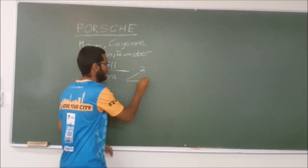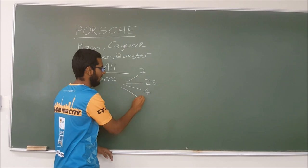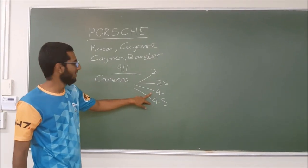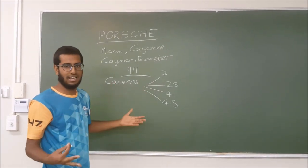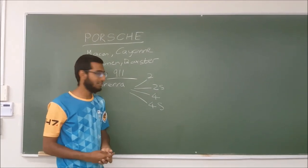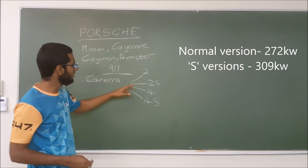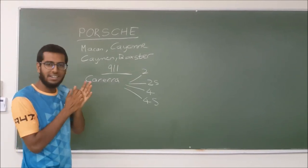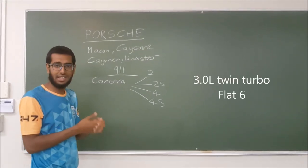So that's the 2 and you get the 2S as well and then 4 and the 4S. So the 4 and the 4S are 4 wheel drive and the S is just a higher level of specs, probably better brakes and a slight increase in power. These ones are generally with a 3 litre twin turbo setup. They are quite fast.